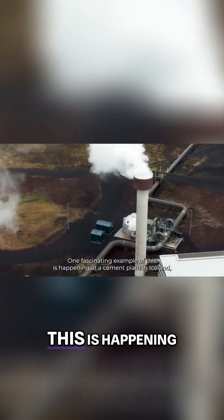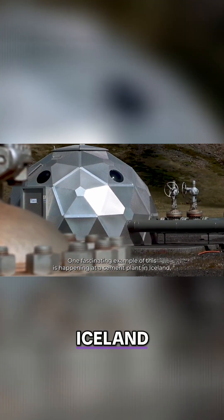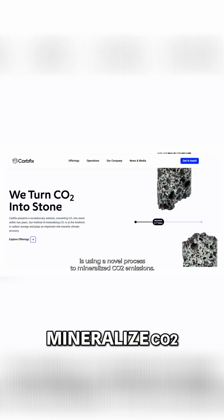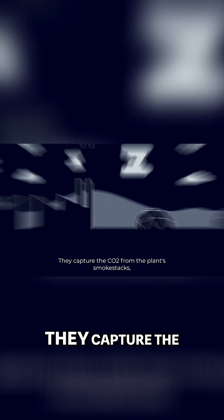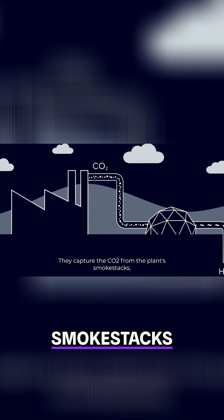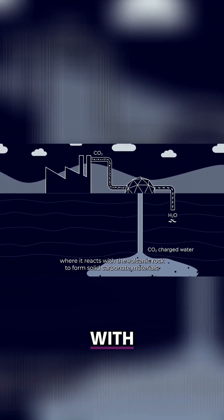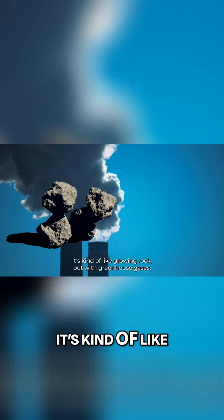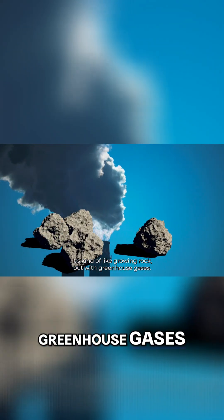One fascinating example of this is happening at a cement plant in Iceland, where a company called CarbFix is using a novel process to mineralize CO2 emissions. They capture the CO2 from the plant's smokestacks, then pump it deep underground where it reacts with the volcanic rock to form solid carbonate materials. It's kind of like growing rock, but with greenhouse gases.